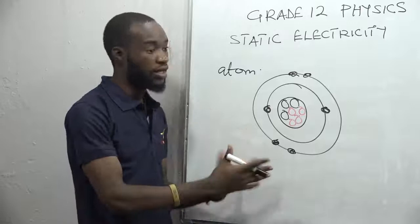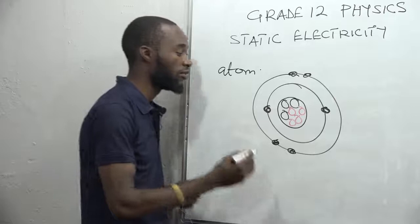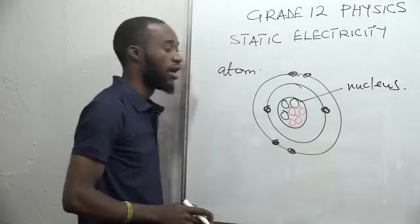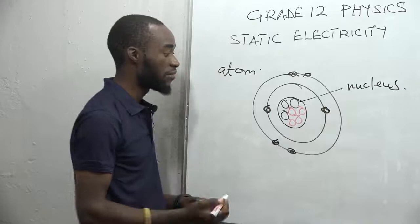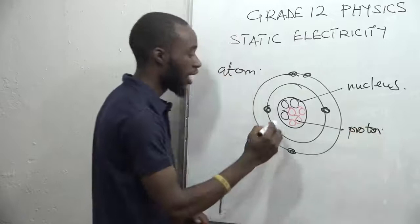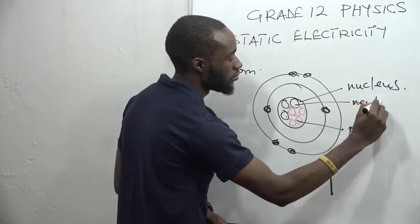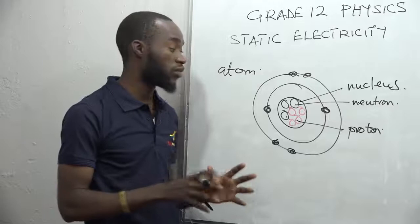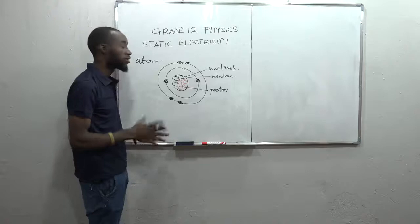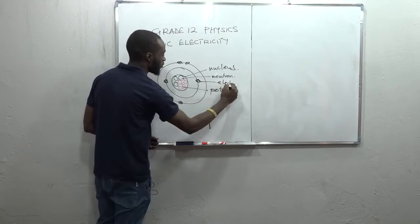When we look at the structure of an atom, there is the center part called the nucleus. Inside the nucleus we have two subatomic particles: the first is called a proton, and the other is called a neutron. Around the nucleus we have what we call energy levels or shells, and along these shells or orbits there are what we call electrons.